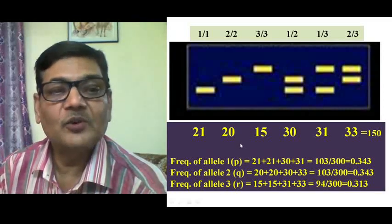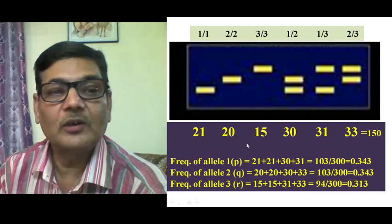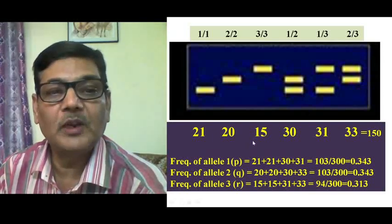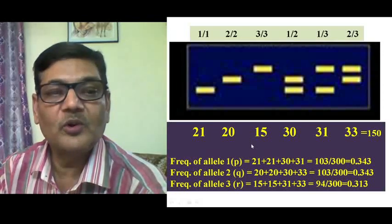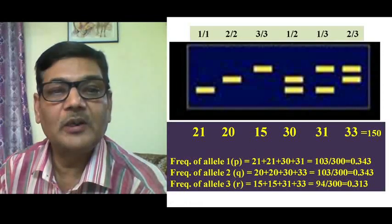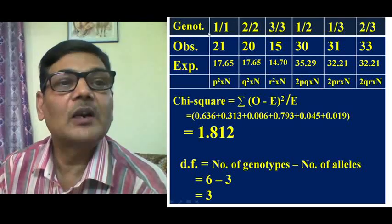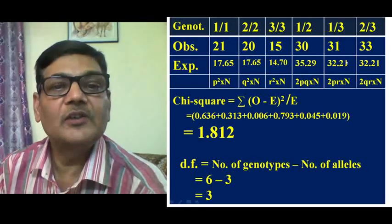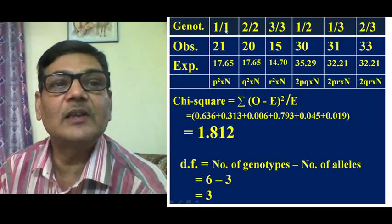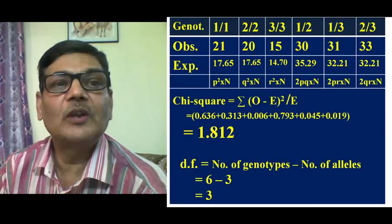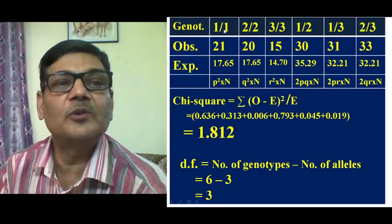Now we can also test whether this population is in Hardy-Weinberg equilibrium, or more specifically, whether this microsatellite locus is in Hardy-Weinberg equilibrium. For this, some more steps will have to be done. In this table, there are 6 genotypes — if 3 alleles are present, the number of genotypes will be 6, which is simple to understand.